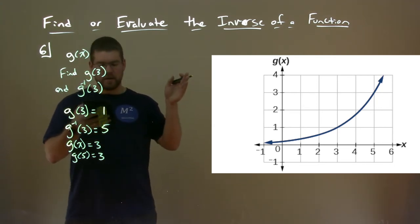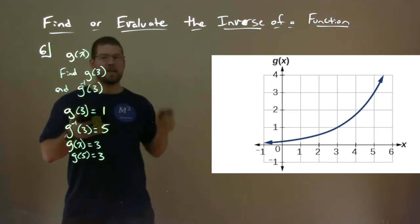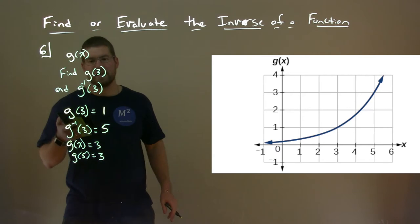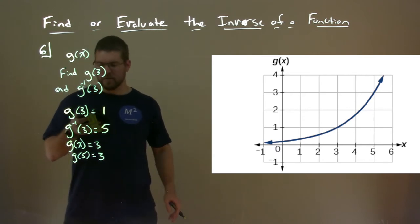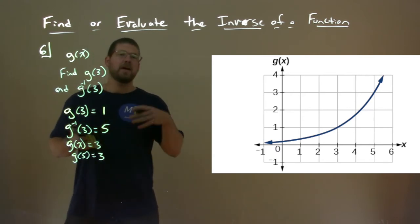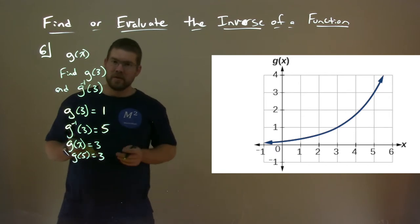Notice the points there, which are pointing at (3,1) and (5,3). And that's how we're finding g(3) and g inverse of 3.